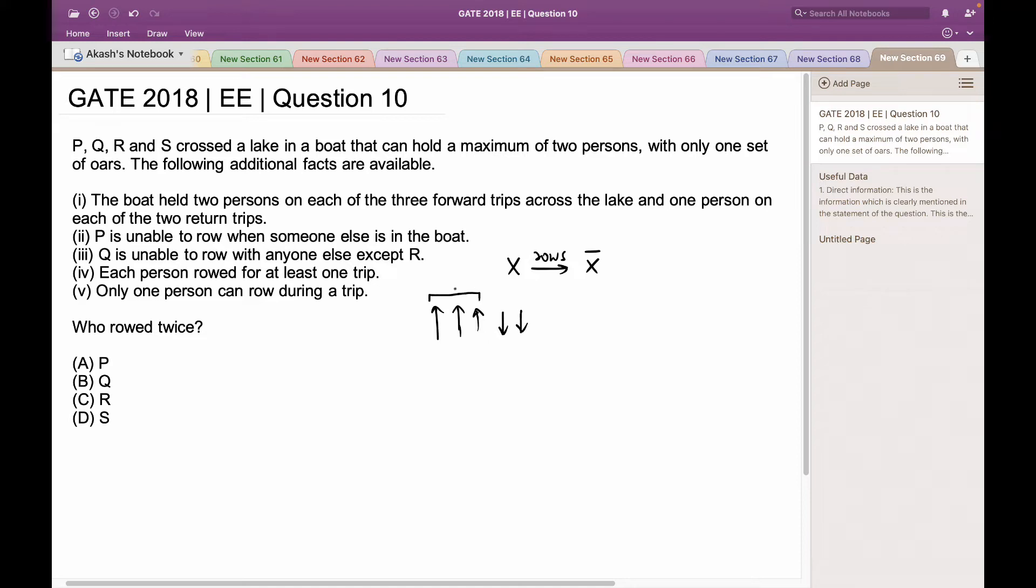For the three forward trips, two people can row the boat. And for the two return trips, only a single person can row. In total, there should be five trips with the boat. The second thing which is given to us is that Q is unable to row with anyone else except R, which means that Q and R have to row together. Also, Q has to row during the forward trip because Q can never row alone.